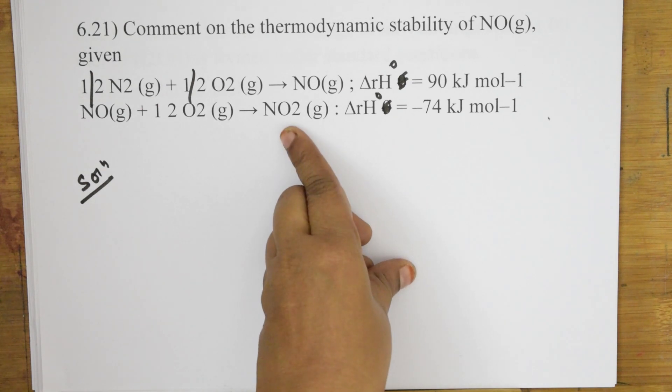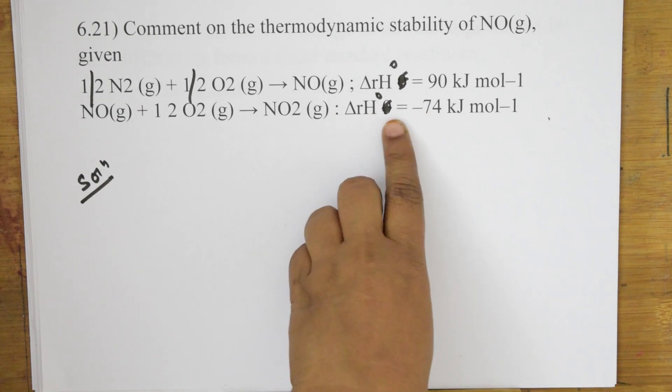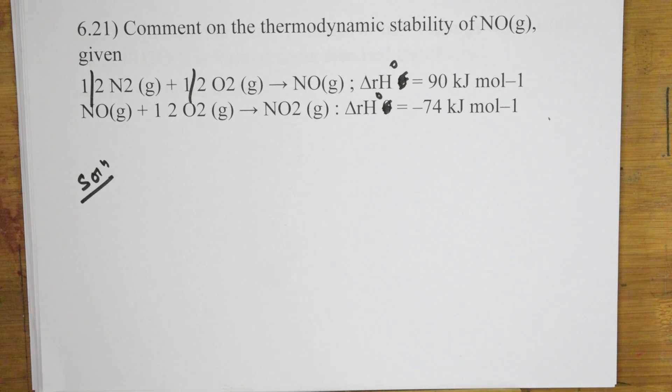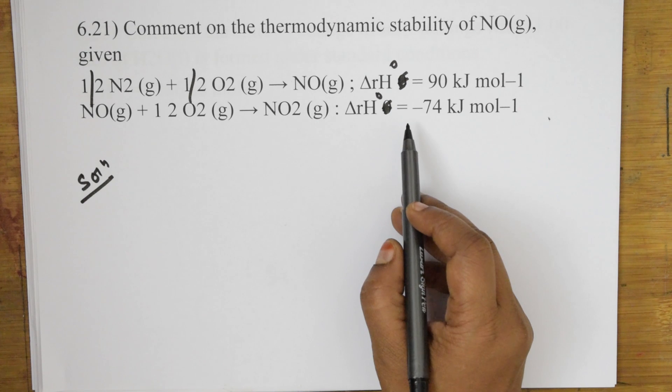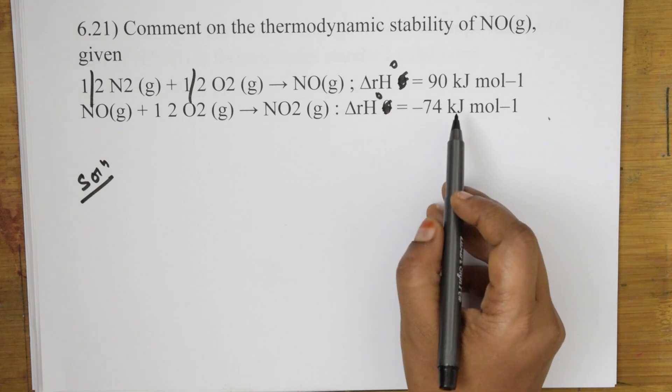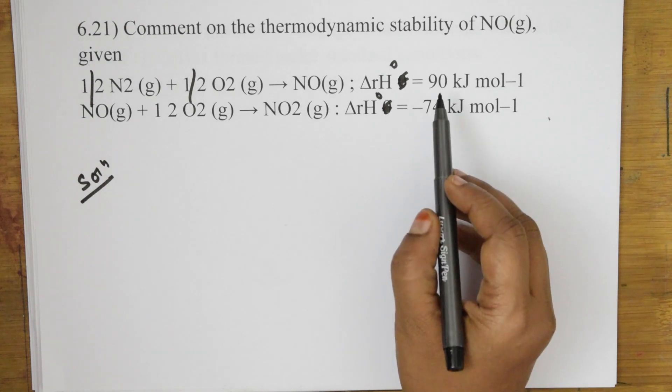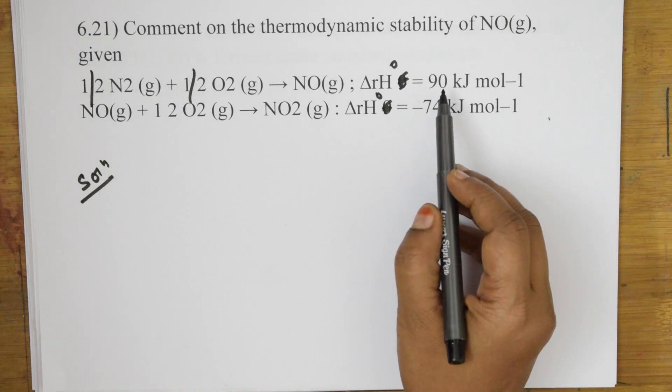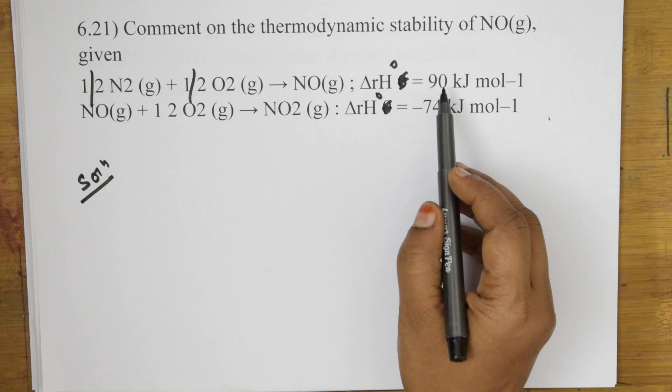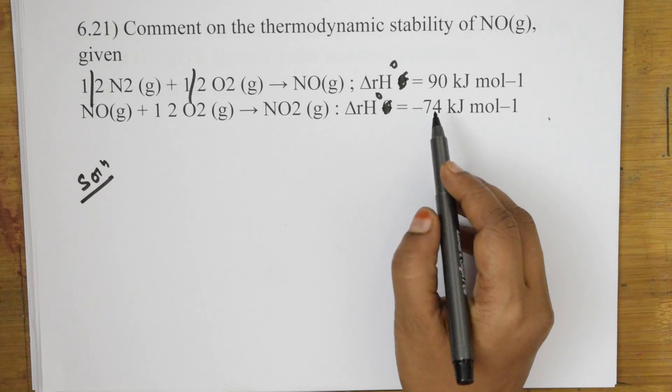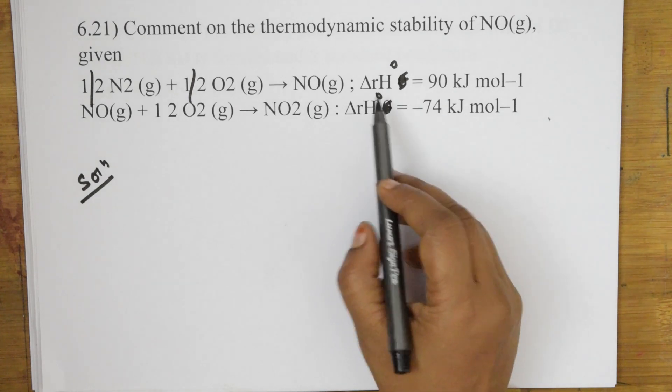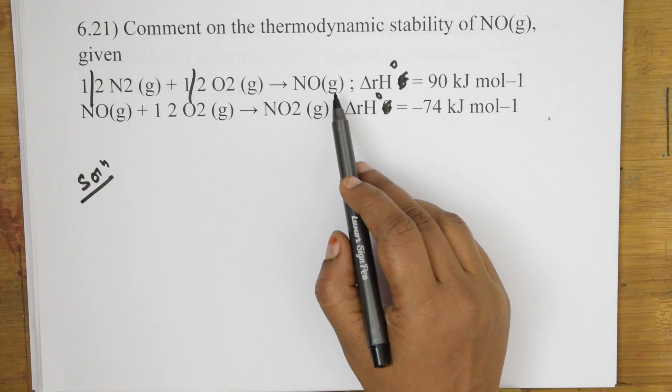So, here when I take the formation of NO2, here the energy is released. See here minus 74 kilojoules per mole. That is nothing but it is an exothermic reaction. So, when I see this endothermic and exothermic reaction, simple. Endothermic reaction, whenever something is formed from the endothermic reaction or when the energy is observed, a lot of entropy or disorder is in the reaction. So, exothermic reaction, it is not so much. So, remember NO gas formation is unstable.